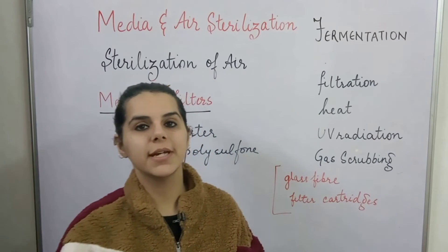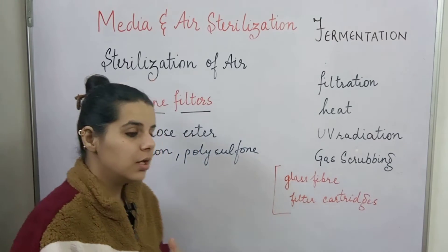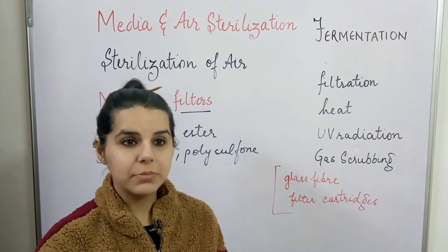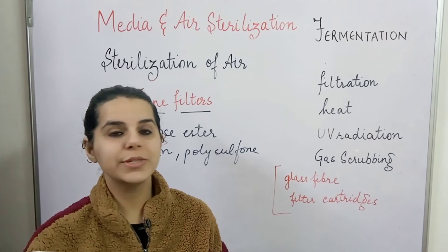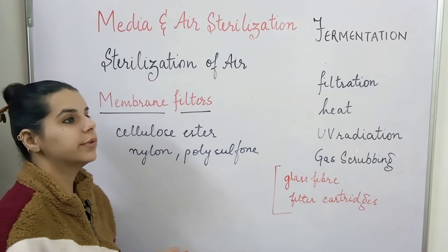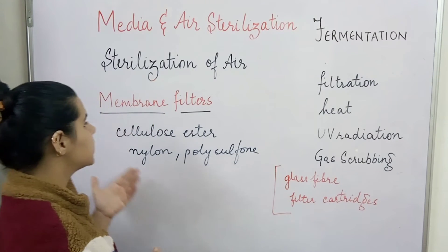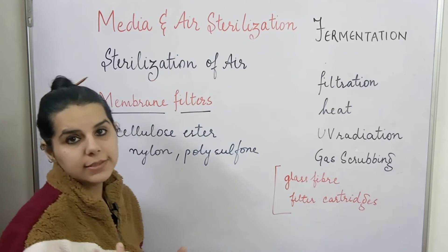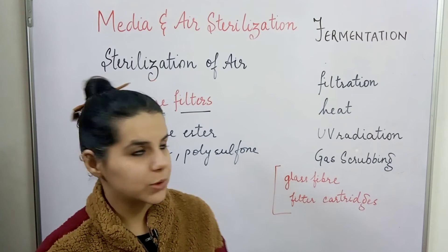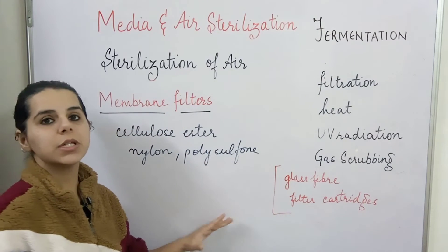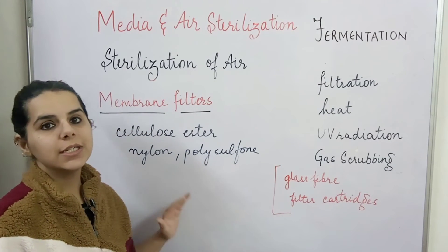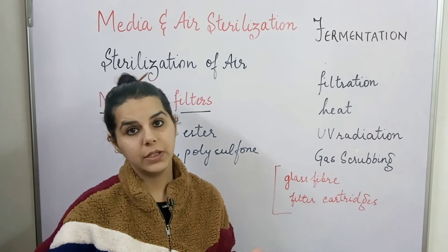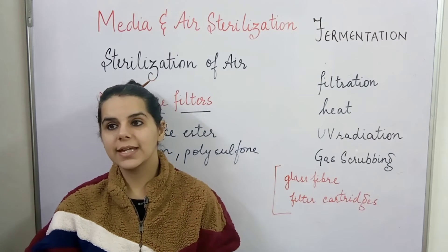Another type of filter used apart from depth filters is membrane filters. These are easy and simple to use, and they can be easily replaced. The materials used for membrane filters include cellulose esters, nylon, and polysulfone. These are also extensively used for air sterilization in industrial fermentation.